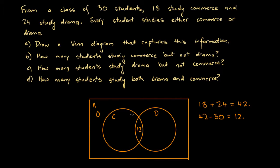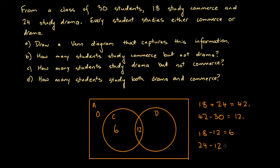What about the commerce-only section? This represents students who study commerce but not drama. We know there are 18 students who study commerce overall, and 12 of those students also study drama. So how many students just study commerce? That's going to be 18 minus 12, which is 6. So there are 6 students who study commerce alone. What about those who study drama? We know 24 students overall study drama, and 12 of those also study commerce. So how many study drama and just drama? That's 24 minus 12 equals 12 students. So we fill in 12 here.